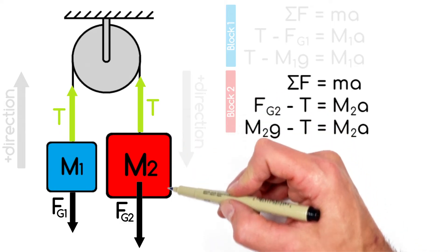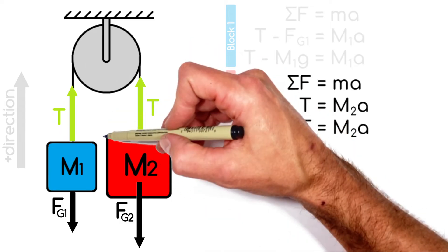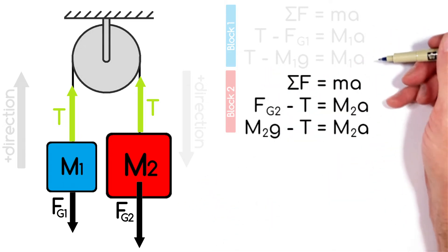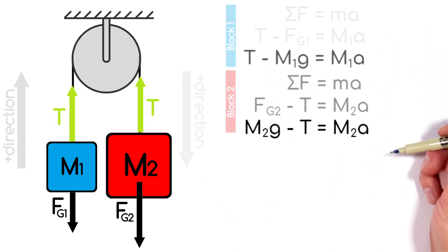It's impossible for this block to accelerate downward faster than this block is accelerating upward. So all we have over here now is just two equations and two unknowns.